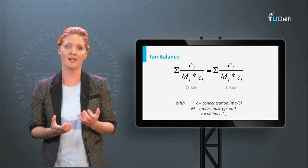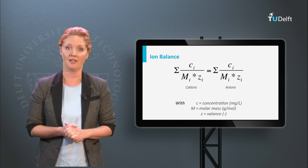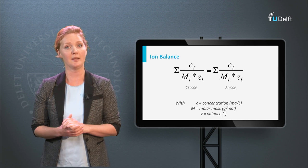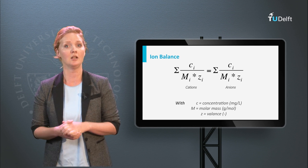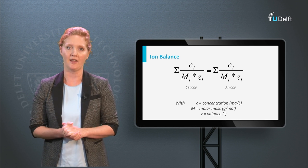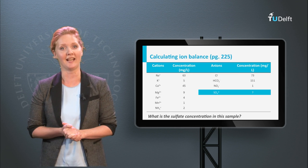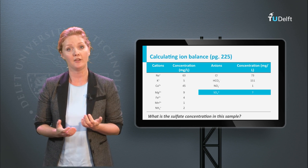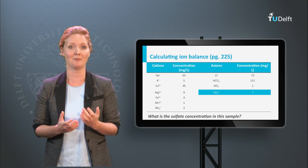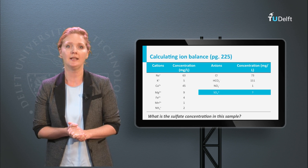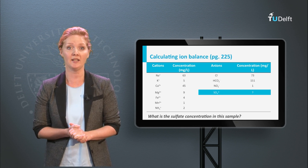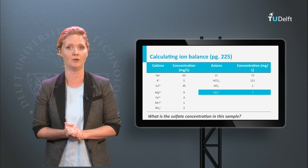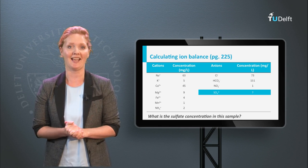This formula summarizes the ion balance with the sum of cations on one side and the sum of anions on the other side. The milliequivalents can be calculated with the concentration in your water sample, the molar mass, and the valence of the ion. Let's practice with an exercise. This slide depicts the water composition of a sample; however, the sulfate analysis failed. Assuming that the major ions have all been measured, can you calculate what the sulfate concentration in this water is? You can take the time to calculate this for yourself now by pausing this video. Restart it again when you are ready to hear the answer.